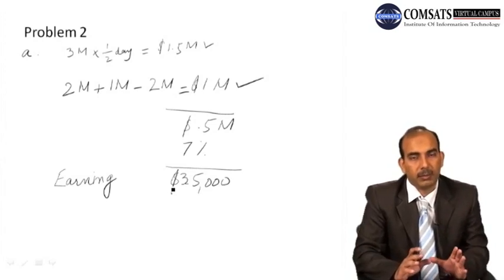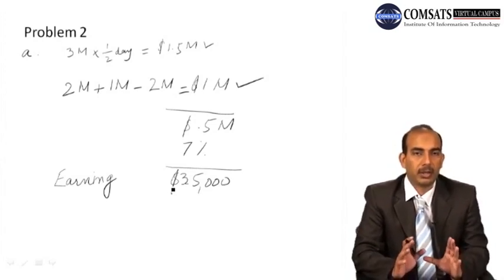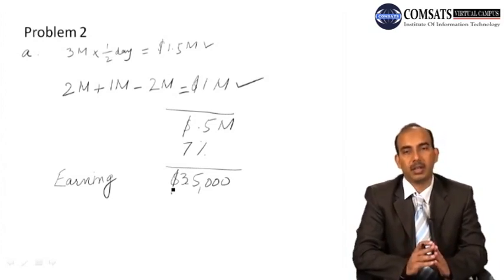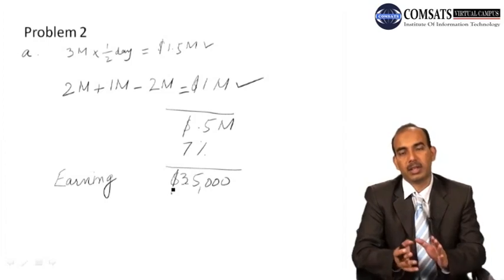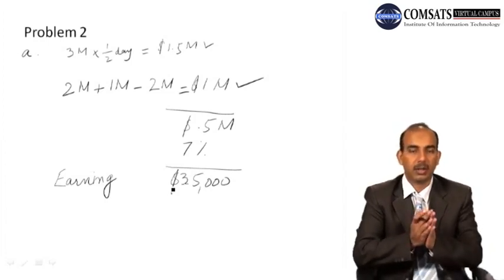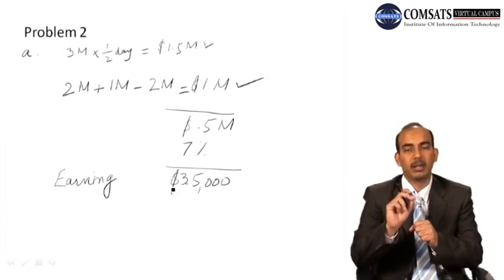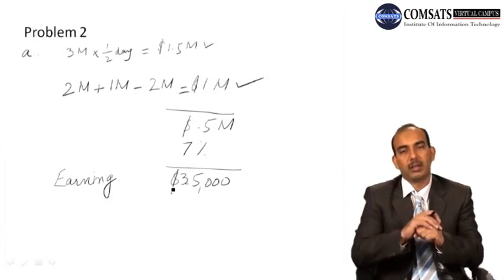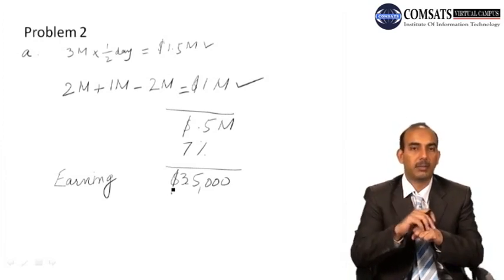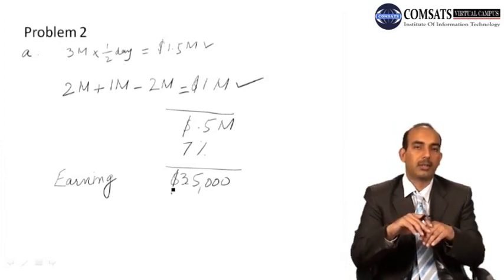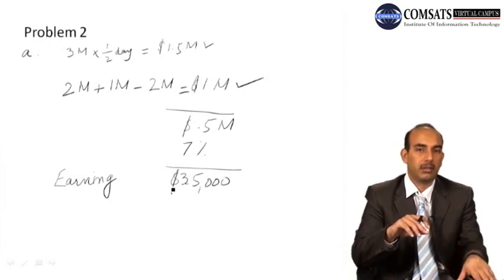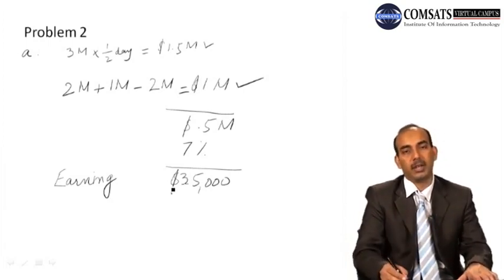Previously the firm was maintaining a compensating balance of $2 million, but now it has to maintain $3 million. However, the cash available at its disposal is increased by $1.5 million. After committing the extra $1 million in compensating balance, there is $0.5 million still available with the firm to invest in securities at 7%, earning $35,000 annually using this arrangement.